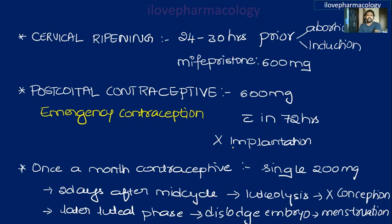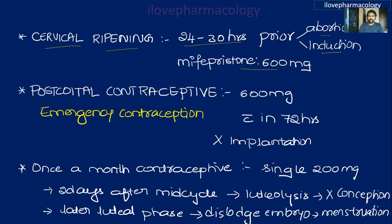Apart from terminating early pregnancy, mifepristone can be used for cervical ripening — given 24 to 30 hours prior to abortion or induction at 600 mg — which softens the cervical mucosa, thereby favoring abortion or induction.